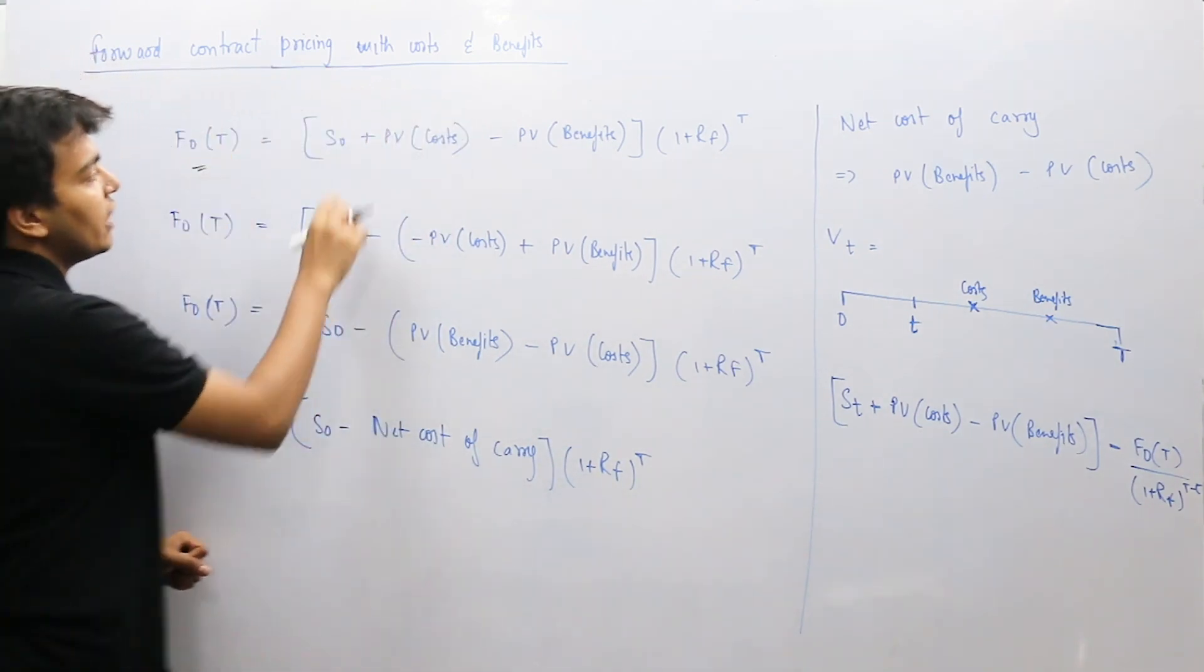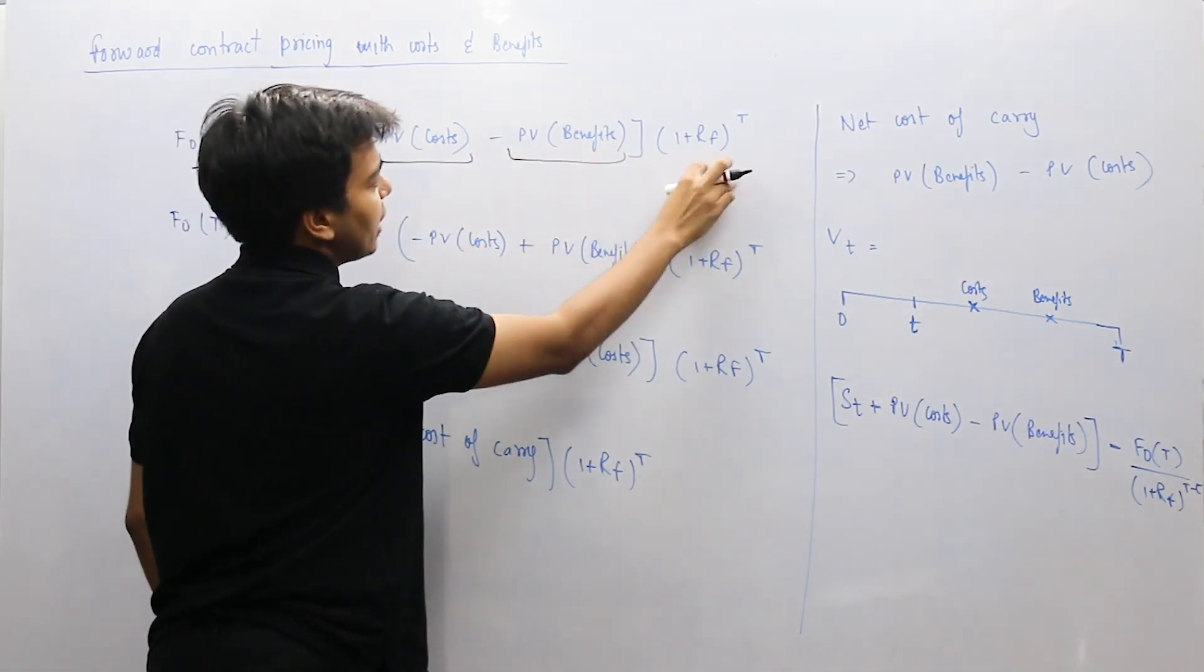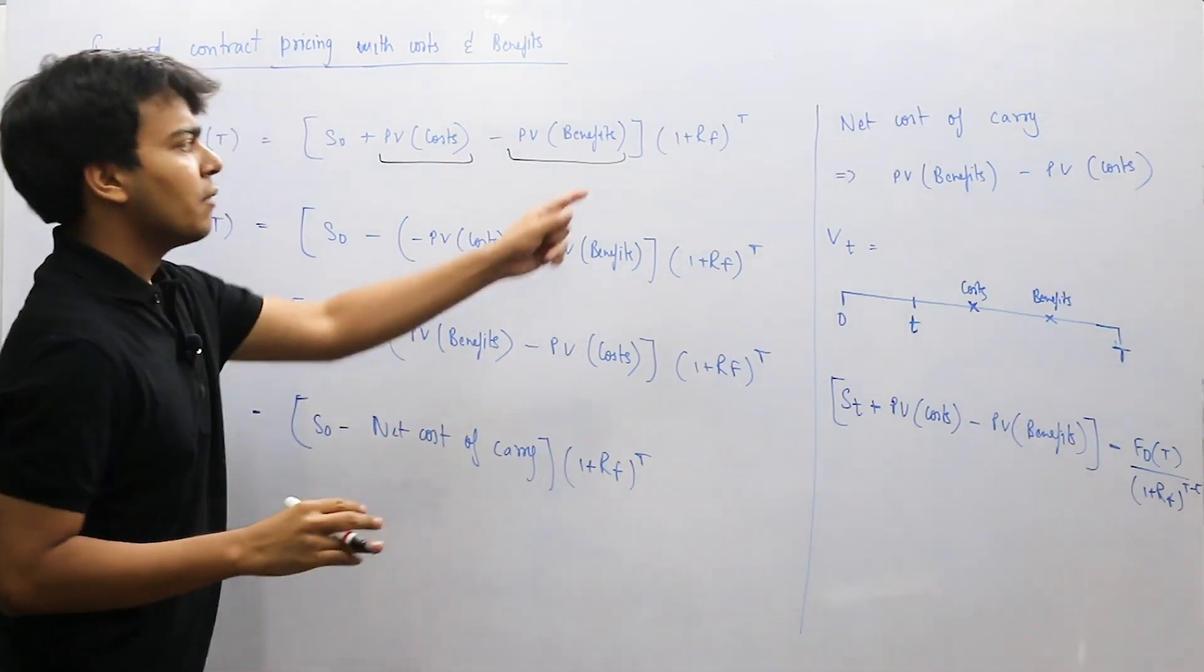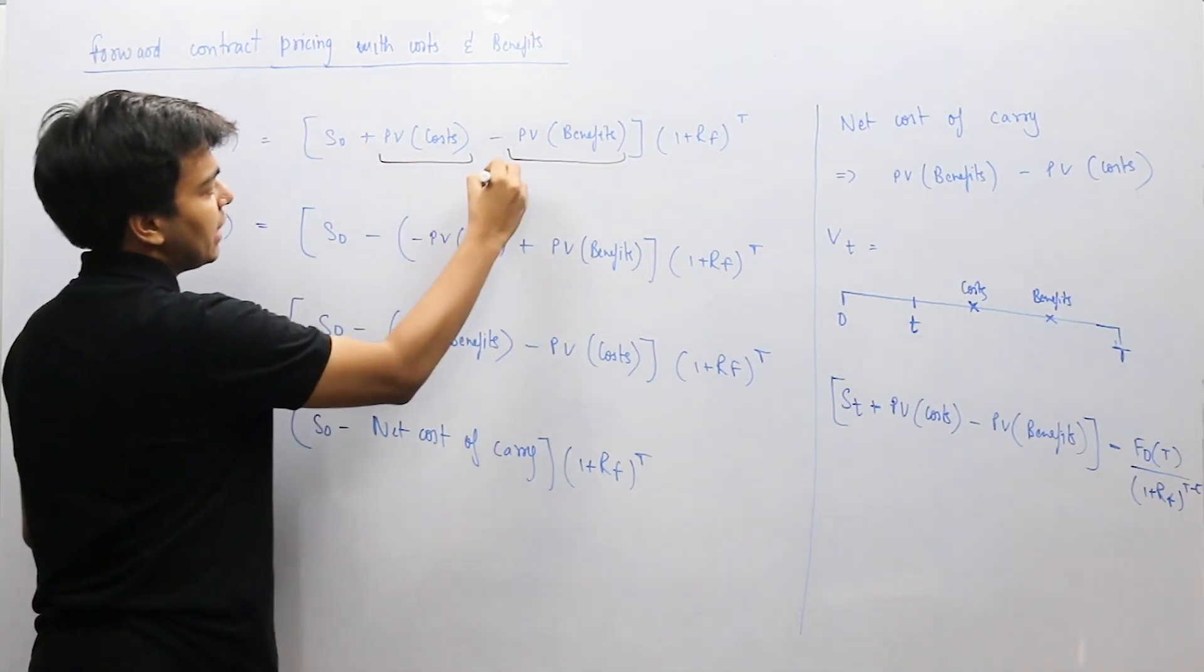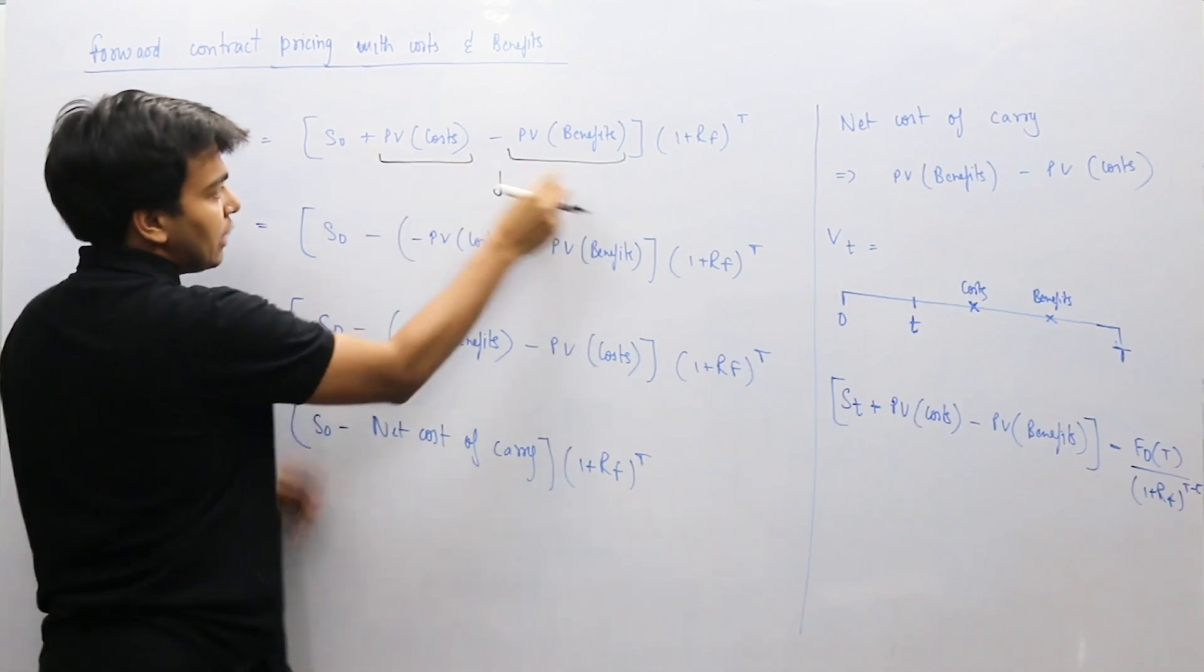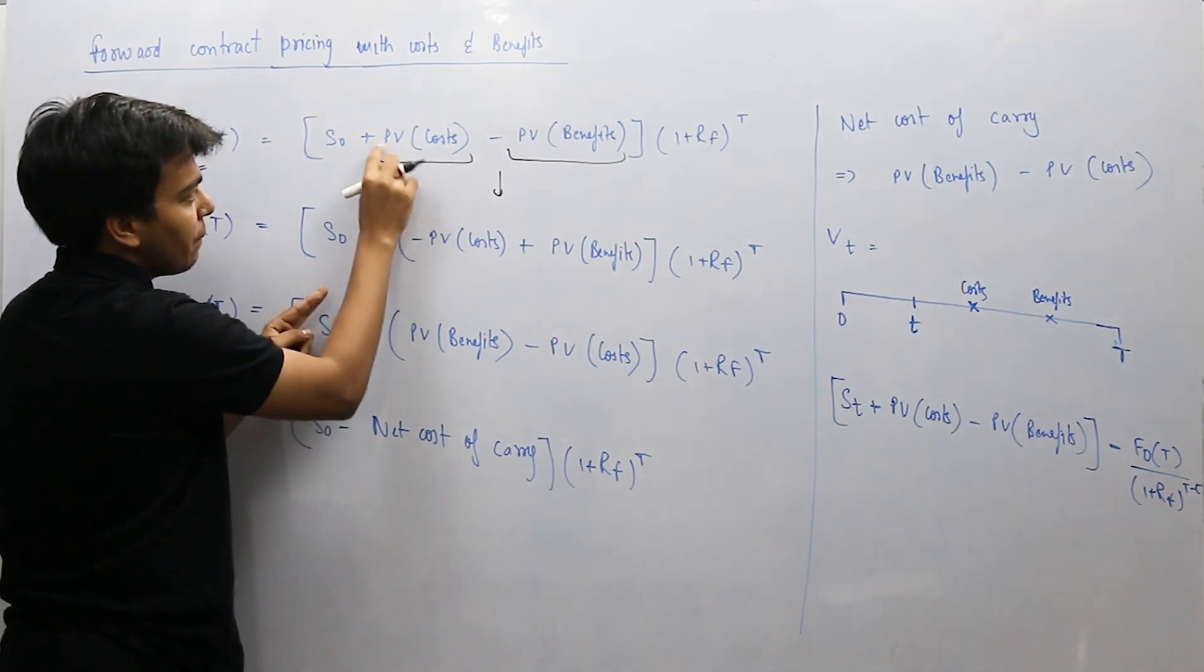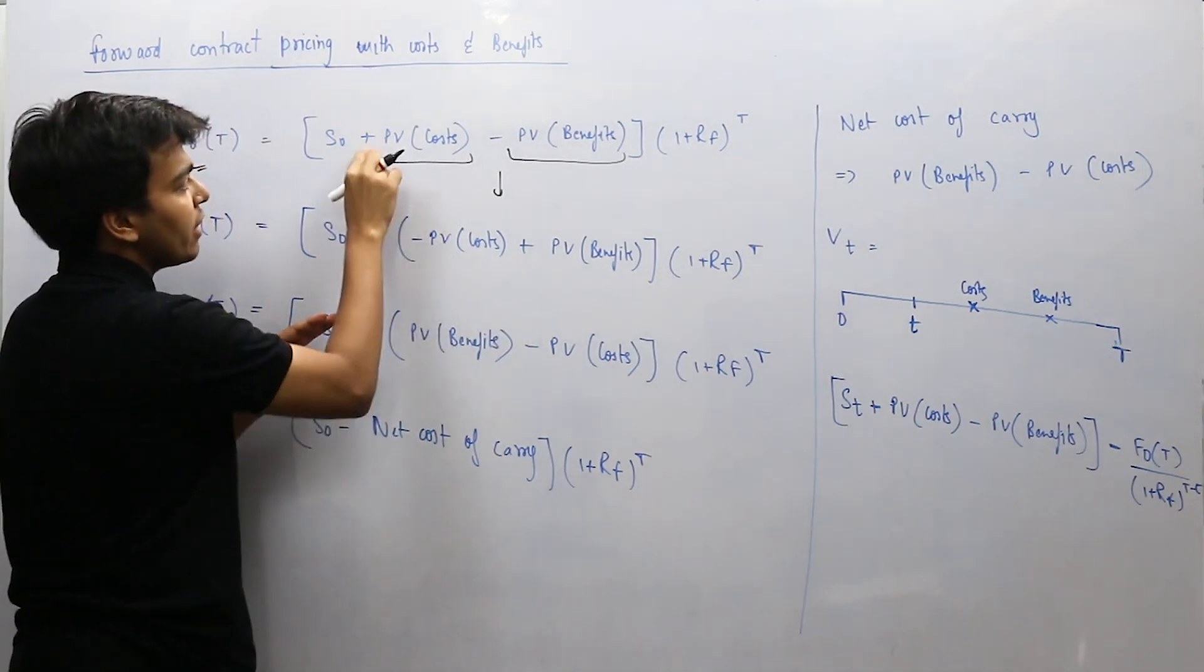Alright, so this was the formula that we have derived: the spot price, you add the cost, you subtract the benefits and you take it to the capital time period T by using the risk-free rate. So, what I have done here in the next step, if you could see, these two I have taken negative common. When we take negative common, we have minus present value of cost, minus minus becomes plus.